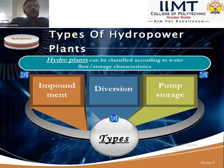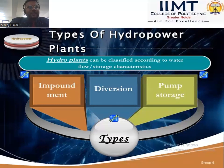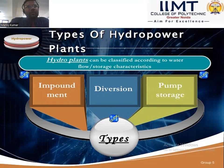There are three types of hydropower plants, classified according to water flow and storage characteristics: high, medium, and low hydropower plants. They are also classified on the basis of storage characteristics as impoundment, diversion, and pump storage.